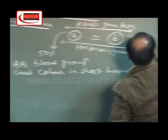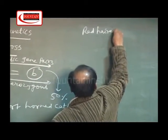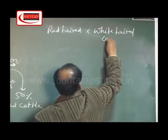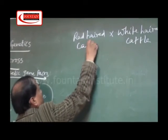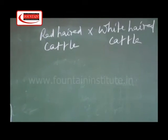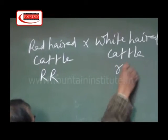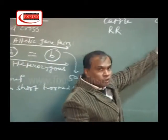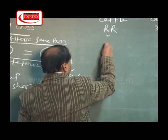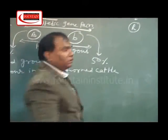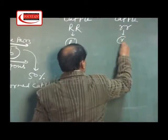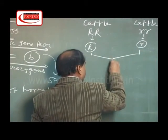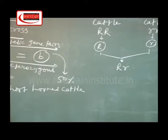For the phenotypic and genotypic ratio, we have to make the cross. Suppose red-haired cattle is crossed with white-haired cattle. The genotype of red-haired cattle is capital R capital R, and the genotype of white-haired cattle is small r small r. Both are in homozygous condition. So one type of gamete will be formed from each — capital R and small r respectively. When we cross them, we get the genotypic combination capital R small r.